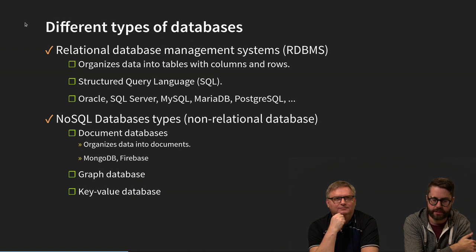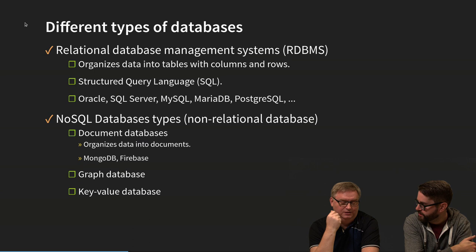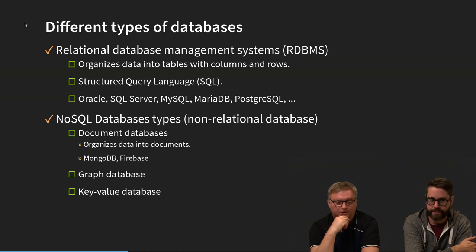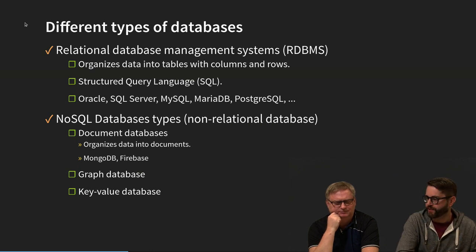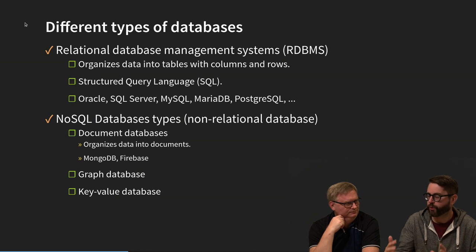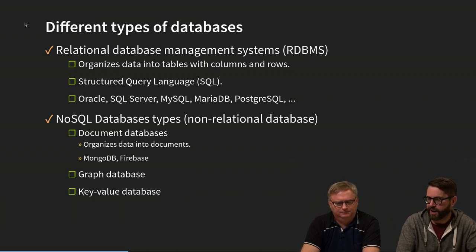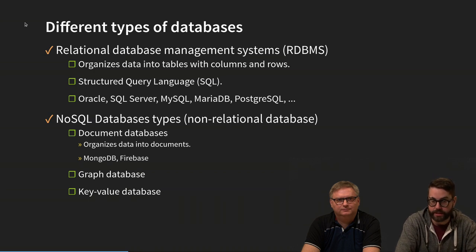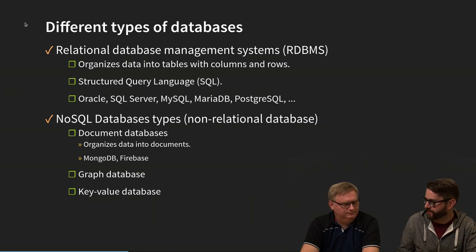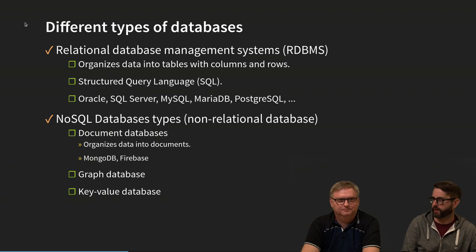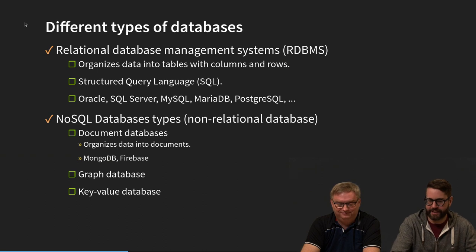Relational database management systems are a really neat way of organizing data — very structured. You have a special language: SQL. In my view, you need to think about the organization of the data in advance. It's really good if you have a picture of all the data you need to store, model that whole application, and then start working. It's a little bit harder to make changes — and that is probably an advantage with NoSQL database types like document databases, where it's easier to handle changes on the database side.